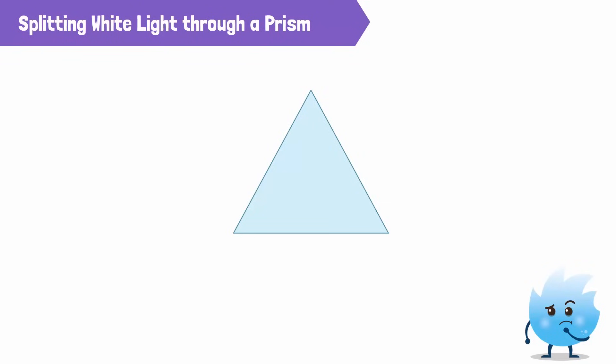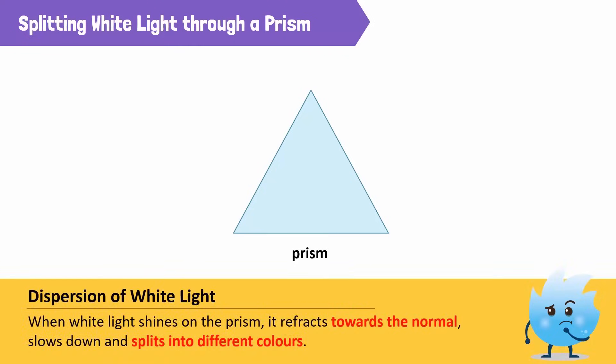Wondering what this is? This is a prism. It breaks a single beam of white light into several beams of light. When white light shines on the prism, it refracts towards the normal and slows down, then splits into different colors. However, the different color constituents slow down to different extents, so the white light starts to disperse into its constituent colors.